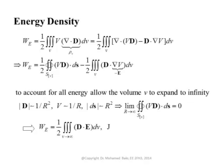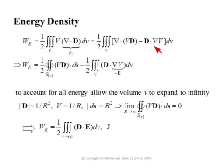We start by using a well-known vector identity: V times the divergence of D equals the divergence of VD minus D dot gradient V. Here V is a scalar and D is a vector, so VD is a vector. This is a vector identity. We then take the second part and apply the divergence theorem, converting the volume integral of the divergence into a surface integral over the enclosed surface.